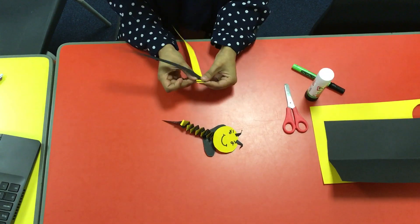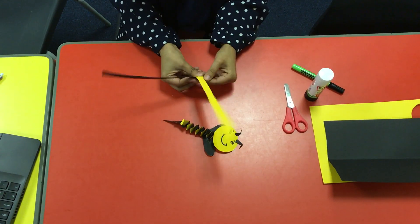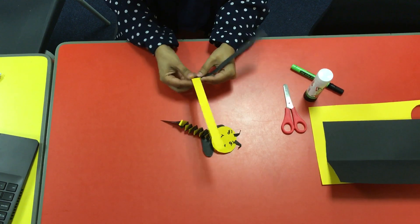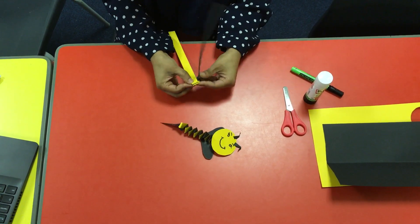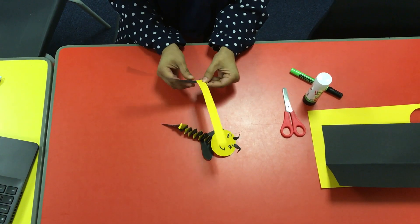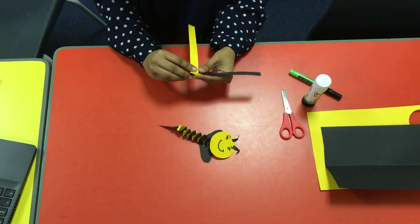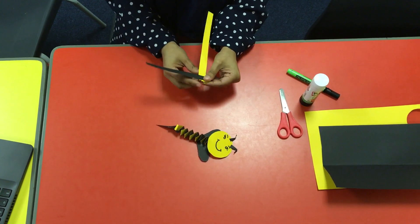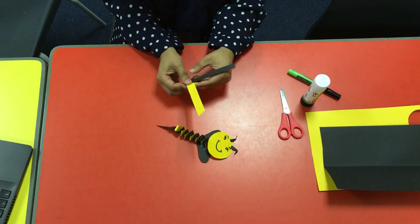Making sure that both strips of paper are the same size as well. Once you've done that, coming towards the end, you need to just glue the bottom to make sure that it is secure.